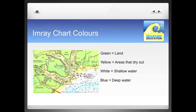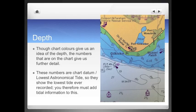Imray chart colours, on the other hand, are quite different. Green areas show land, yellow areas denote areas that dry out, white is shallow water and blue is deep water. Depth on the chart is shown by colours — green areas dry out, dark blue is shallow water, white is deep water. It's worth checking the top of the chart to see what it's measured in; in this instance it's measured in metres.